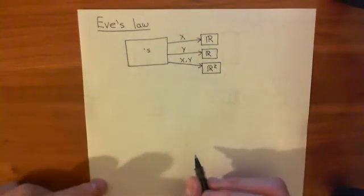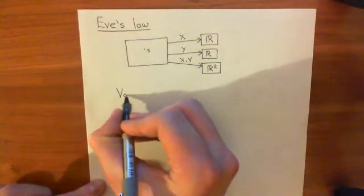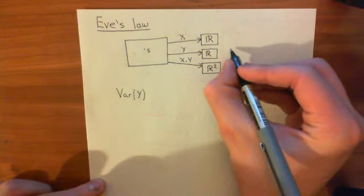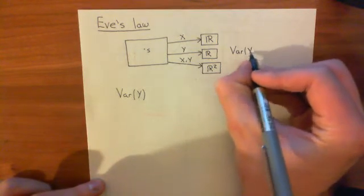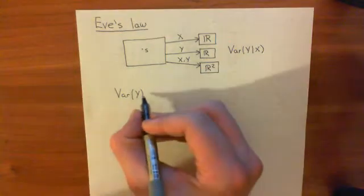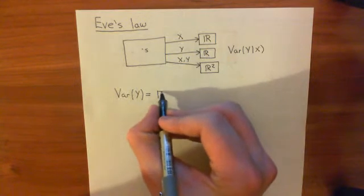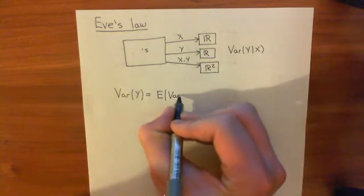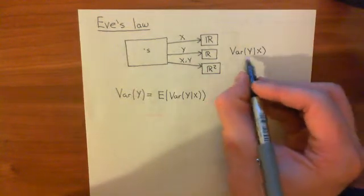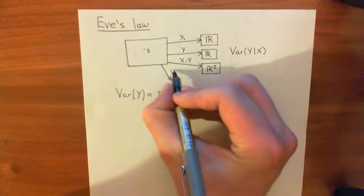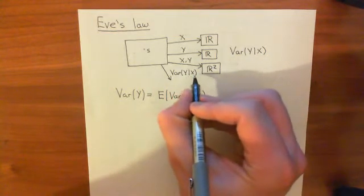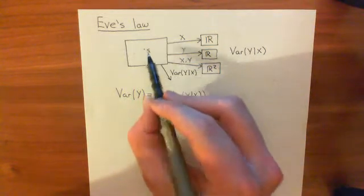What we want to do is calculate the variance of the random variable y. Can we do it in terms of knowing the variance of y given x? That's what Eve's Law is all about. Eve's Law states that the variance of y is actually the expected value of the variance of y given x — which we can think of as a random variable. The variance of y given x ascribes to every outcome the value of the variance of y given that x equals the value x of s ascribed to that point s.